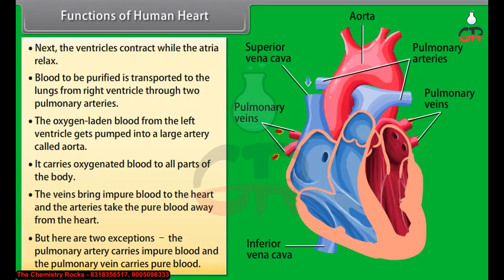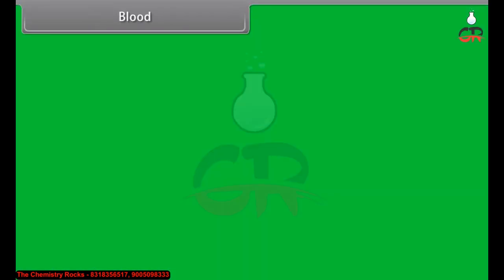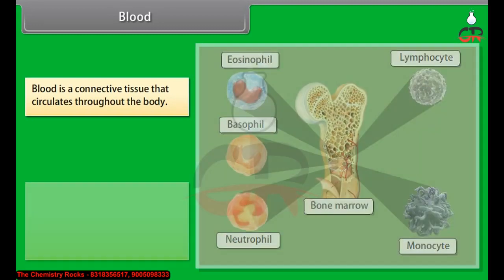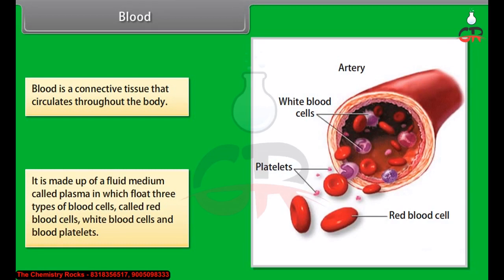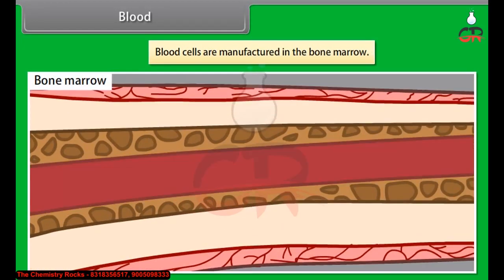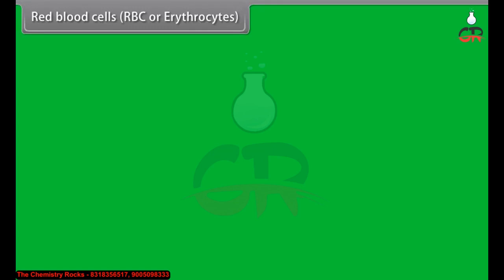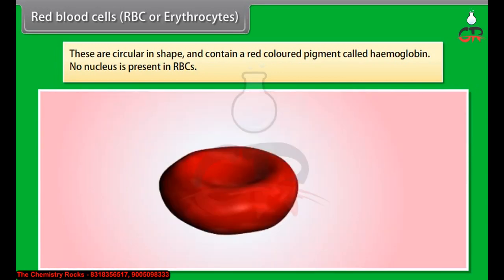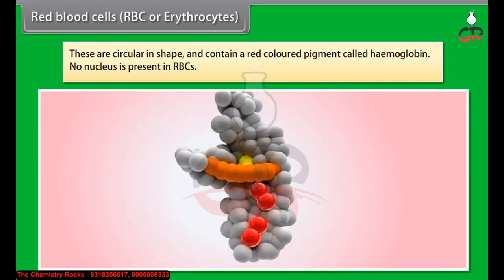Blood is a connective tissue that circulates throughout the body. It is made up of a fluid medium called plasma in which float three types of blood cells: red blood cells, white blood cells and blood platelets. Blood cells are manufactured in the bone marrow. Red blood cells (RBCs or erythrocytes) are circular in shape, contain a red-colored pigment called hemoglobin, and have no nucleus. RBCs carry oxygen to tissues and bring back carbon dioxide from tissues.